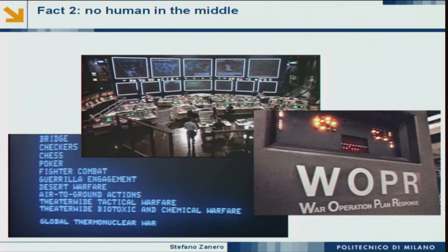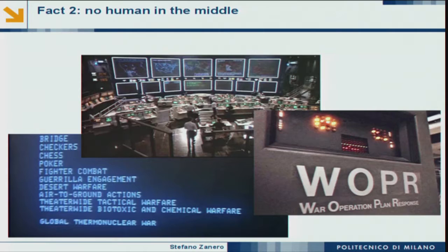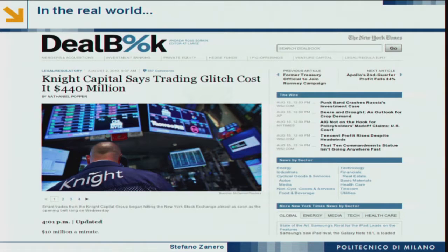For those younger, War Games is a 1984 movie — one of the first to portray hacking. A kid talks over the phone with a computer controlling the US nuclear arsenal and convinces it to launch a nuclear strike. That's what happens when you take humans out of the loop. The machines need to be more safe and checked, because there's nobody to tell the machine 'no, don't do this.'